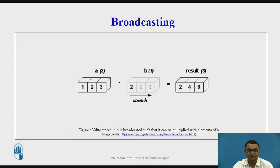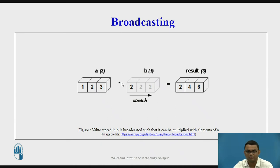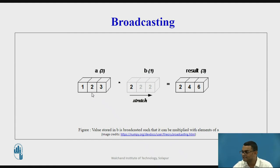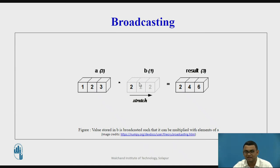Let us see with an example. We have a one-dimensional array A having three elements and a one-dimensional array B having one element, and we perform multiplication. Element 1 is multiplied with 2 giving value 2, element 2 is multiplied with 2 giving value 4, and element 3 is multiplied with 2 giving value 6. This array of size 1 is broadcasted so it can be multiplied with each element of A.